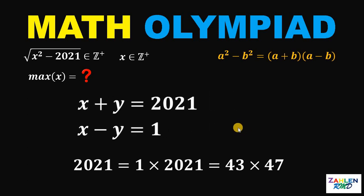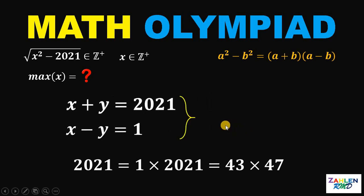Notice that if we add these two equations, we cancel out the variable y and we get 2x equals 2021 plus 1, or simply 2,022. To solve for the value of x, let's divide both sides by 2. Thus, 2022 divided by 2 will give us 1,011. So we have now one possible value for x, which is 1,011.